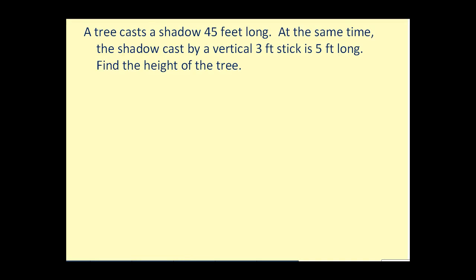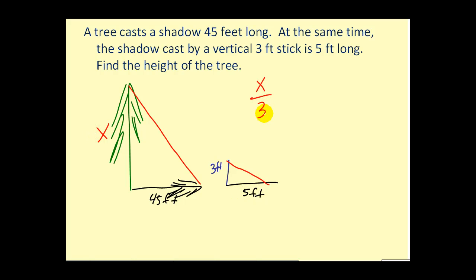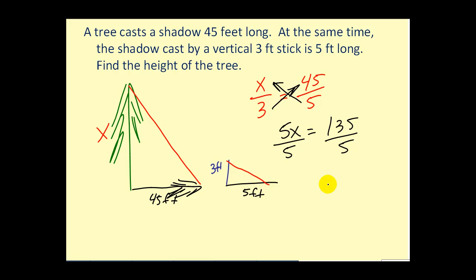We have a tree that casts a shadow 45 feet long, and at the same time, a vertical 3-foot stick casts a shadow 5 feet long. We have two similar triangles, and since we know the sides are proportional, we can set up: X is to 3 as 45 is to 5. Performing cross-products, 5X equals 135, so X equals 27 feet. Without ever having to climb the tree, we used similar triangles to determine the height is 27 feet.